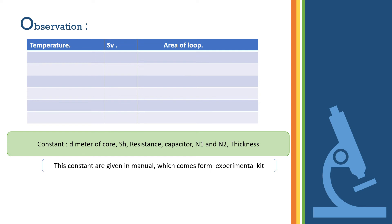The diameter of the core, SH, resistance, capacitor, N1, N2, and thickness are constants which are given in the manual that comes with the experimental kit.